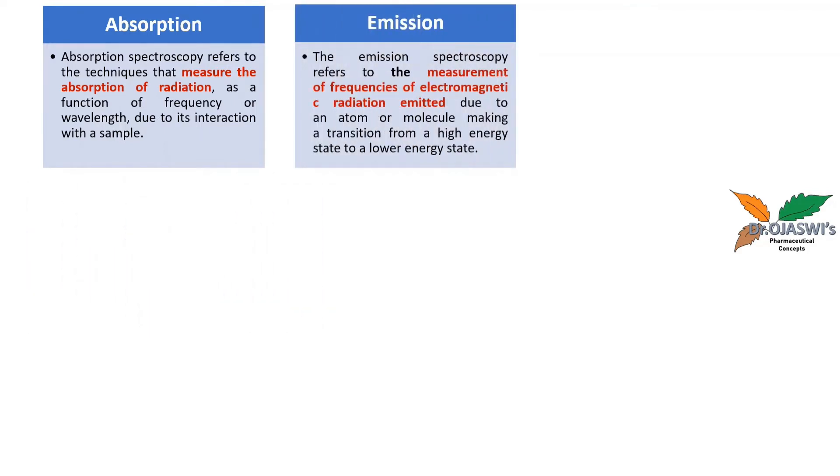The next term is emission. The emission spectroscopy refers to the measurement of frequencies of electromagnetic radiations which are emitted. Through this sample solution, I am passing electromagnetic radiations which possess some energy. That energy is absorbed by these molecules, that is absorption spectroscopy. After absorbing the energy, these molecules can move to a higher excited state. So this is the excited state, this is the ground state. But this excited state is a little unstable. Nobody wants to become unstable, so it tries to come back to the ground state to achieve stability. During this movement, it emits some of the energy.